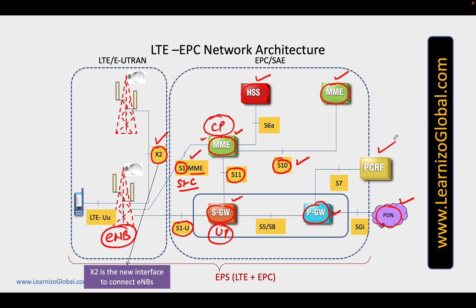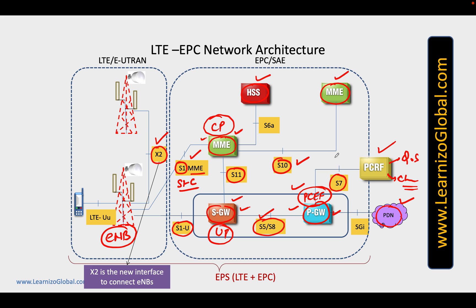The PGW also connects to the PCRF for enforcing policies, and for that we implement another function in the PGW referred to as PCEF, the Policy and Charging Enforcement Function. The PCRF typically manages two things: quality of service and the charging mechanism. The SGW and PGW are connected to each other using the S5 and S8 interfaces, and connect to PCRF via the S7 interface, also referred to as the Gx interface.